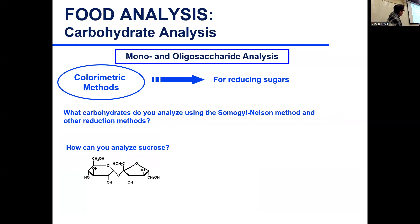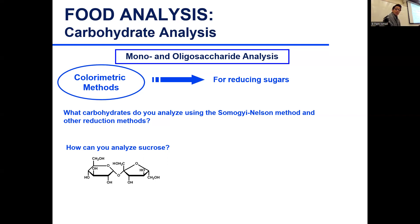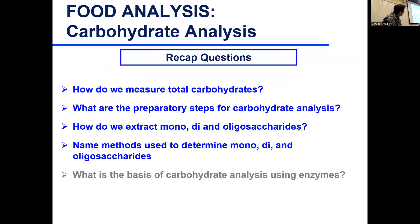What carbohydrates do you analyze using the Somogyi-Nelson method and other reduction methods? Reducing sugars. But if you have sucrose and still want to use this assay — sucrose is not a reducing sugar, so what do you do? You add an acid to break the glycosidic bond, generating glucose and fructose, and then you can measure the total amount of reducing sugars using these methods.